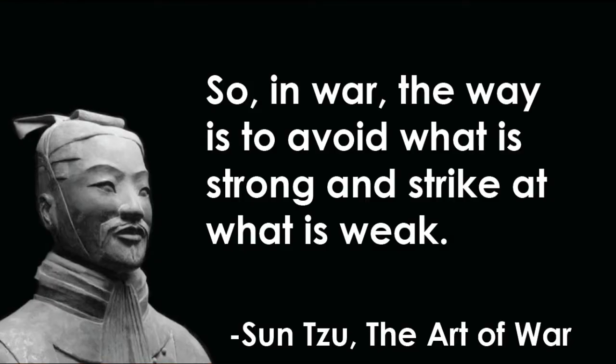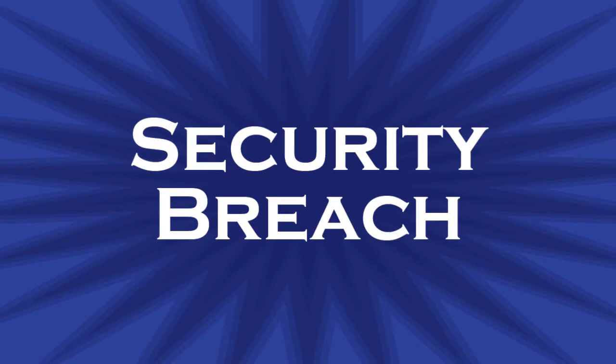So in war, the way is to avoid what is strong and strike at what is weak. Tactic number three: security breach. When they're doing well, focus specifically on their vulnerable spots to decrease their emotional state, having them undo an otherwise magnificent plan in the process.